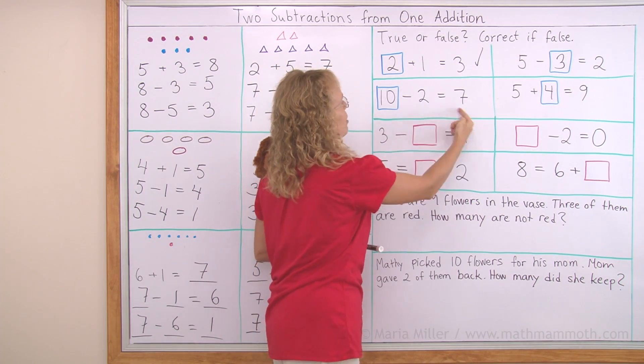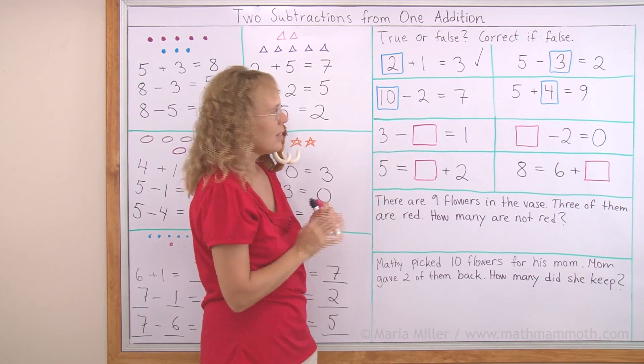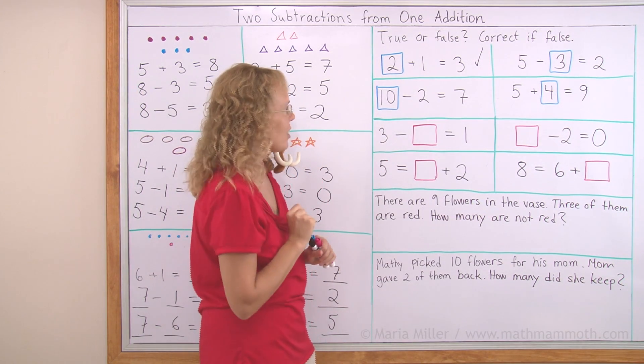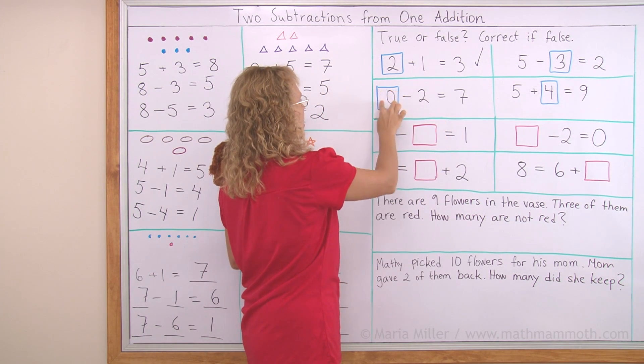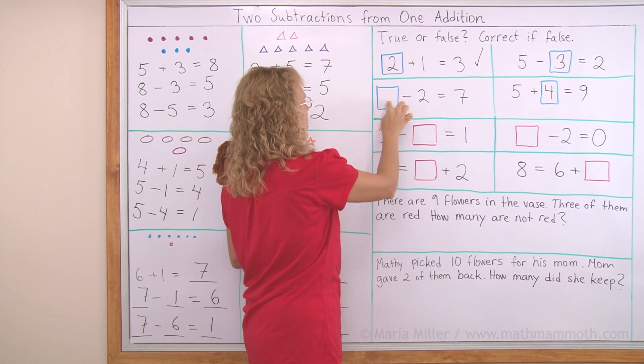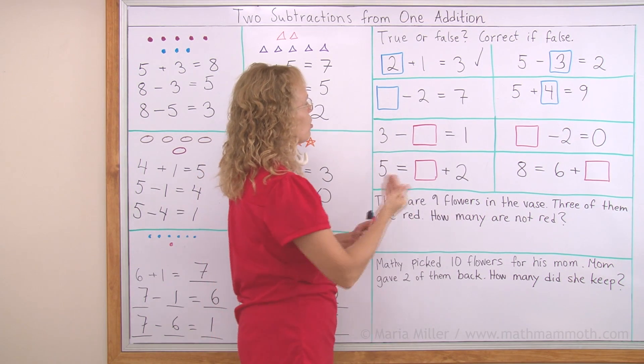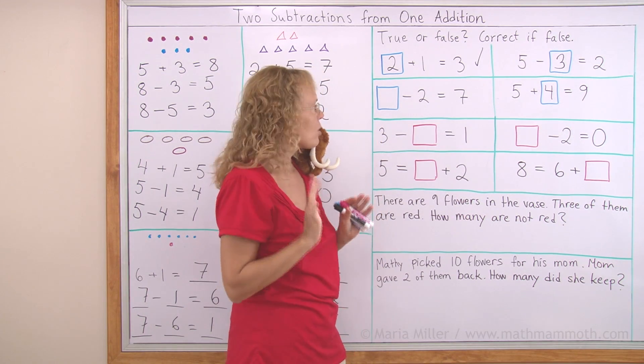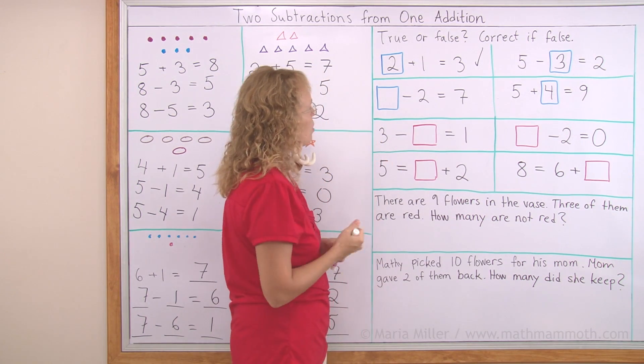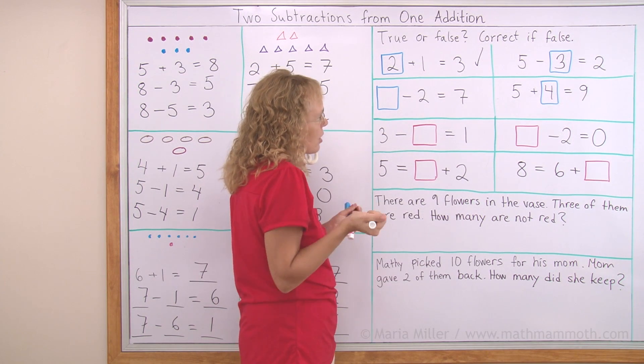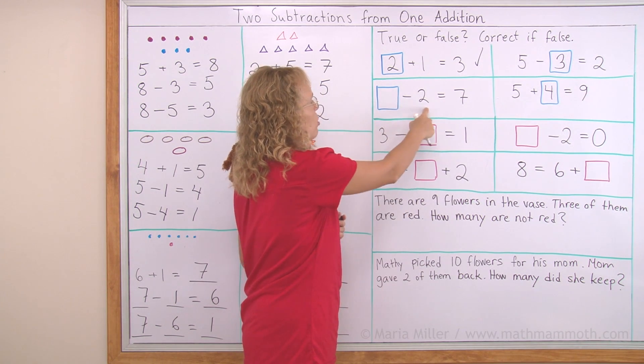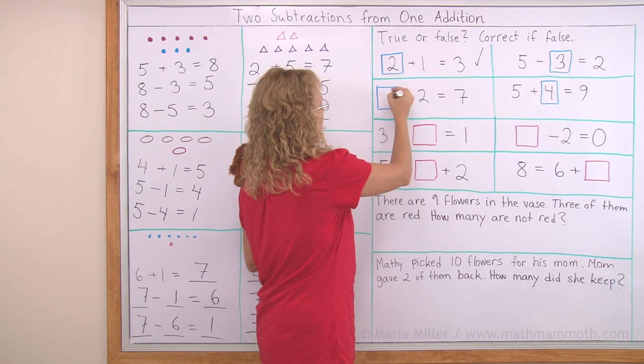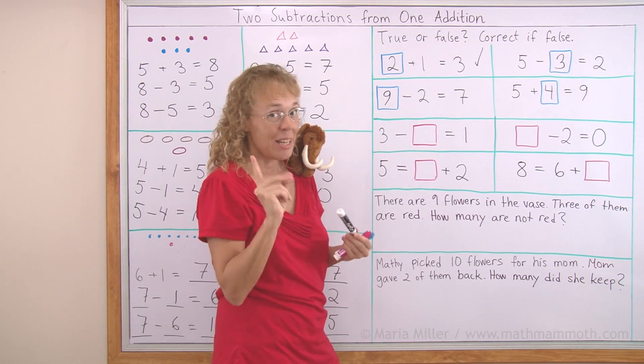Over here. Ten minus two equals seven. Is that true? Ten fingers take away two. No, that wouldn't be correct. That's not right. So let's make this empty again. And now what number would go there? Something minus two equals seven. Ten. Ten minus two was really close, because ten take away two would be eight. So you can try. Let's try eight. Eight minus two. That would be six. That's close, but not right. Let's try nine. Nine minus two. Yep, that's seven.